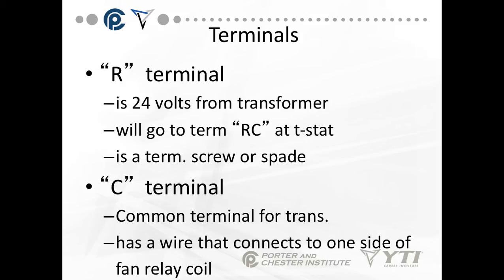The C terminal is the common terminal for the transformer. It already has one wire on it that pre-connects to the side of the relay coil. You can also connect up to here anything else that needs a common coming back to the transformer.